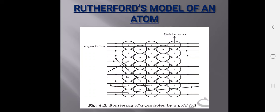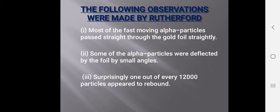The next model is Rutherford's model of an atom. He took a gold foil — a thin sheet of gold — and passed alpha particles through it. The following observations were made: first, most of the fast-moving alpha particles passed straight through the gold foil. Second, some of the alpha particles were deflected by small angles. Third, surprisingly, one out of every 12,000 particles appeared to bounce back, traveling at a 180-degree angle.